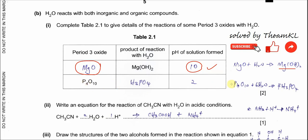For phosphorus oxide reacting with water, it forms phosphoric acid, H₃PO₄. The pH of that solution is 1 to 2 — normally we put 2, but there is a range; you can put 1 or 2.